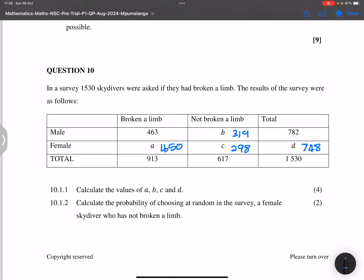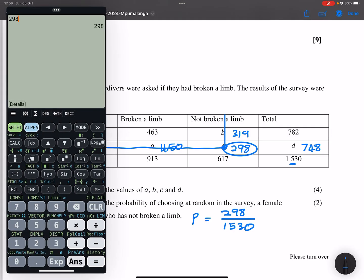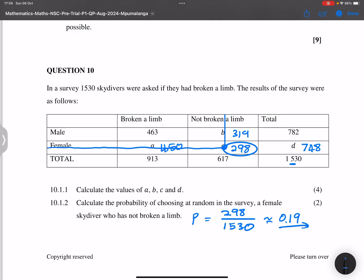They say calculate the probability of choosing at random in the survey a female skydiver who has not broken a limb. So female skydiver who has not broken a limb. So the two intersect right here at C. So females that have not broken a limb, 298. So that means that the probability will be 298 divided by the total number of people, that's 1530. So you can just simply put that in your calculator. And the probability is 0.19.